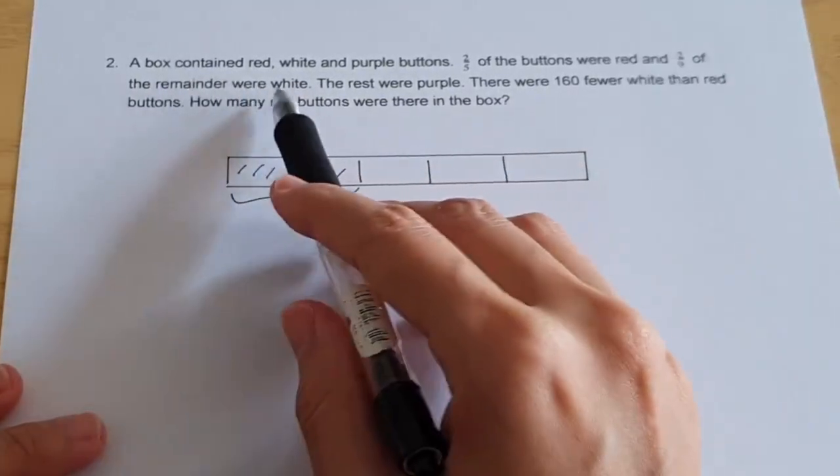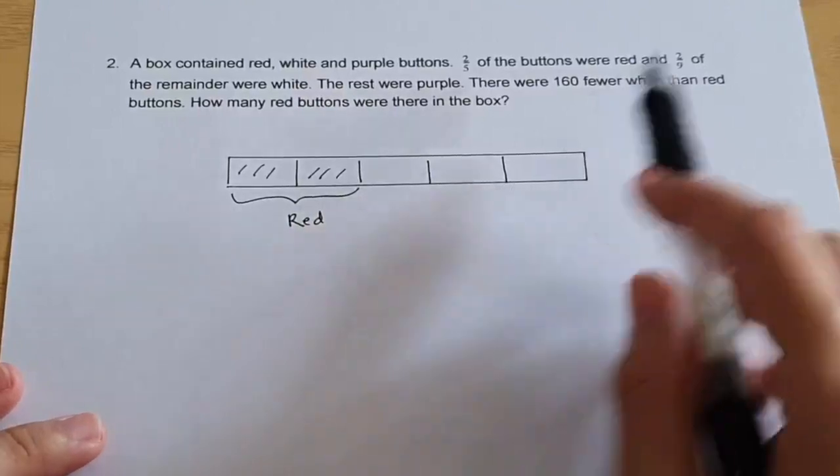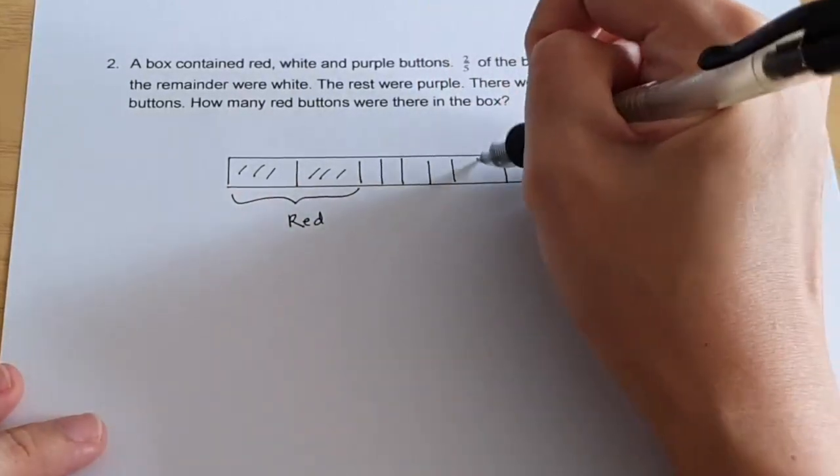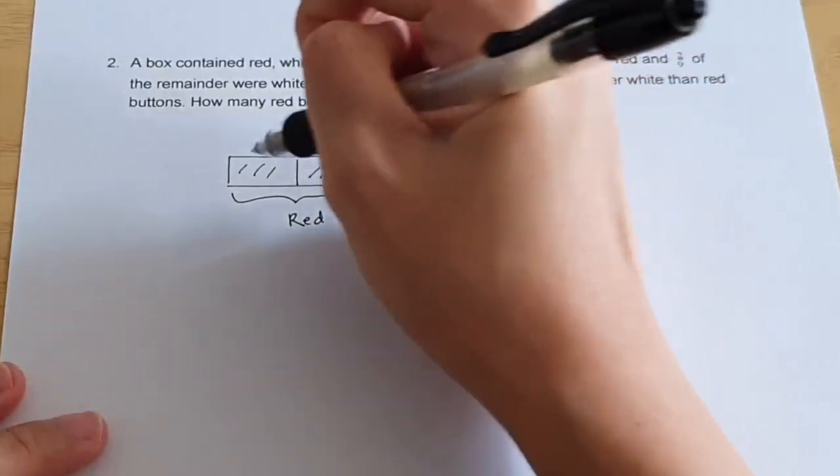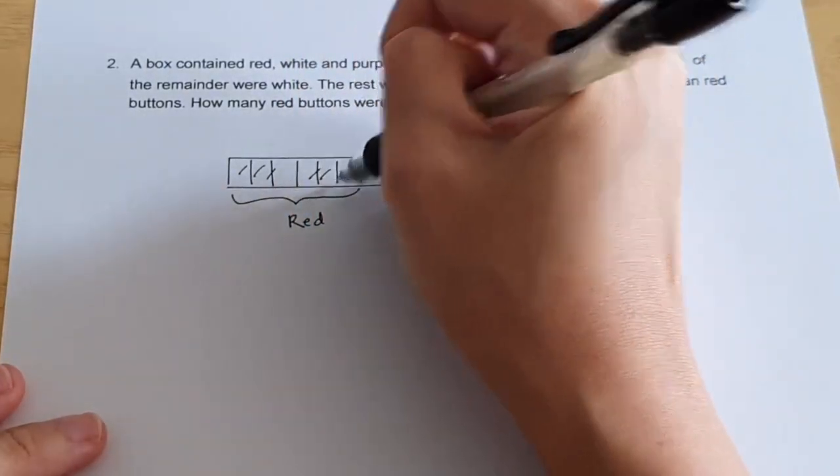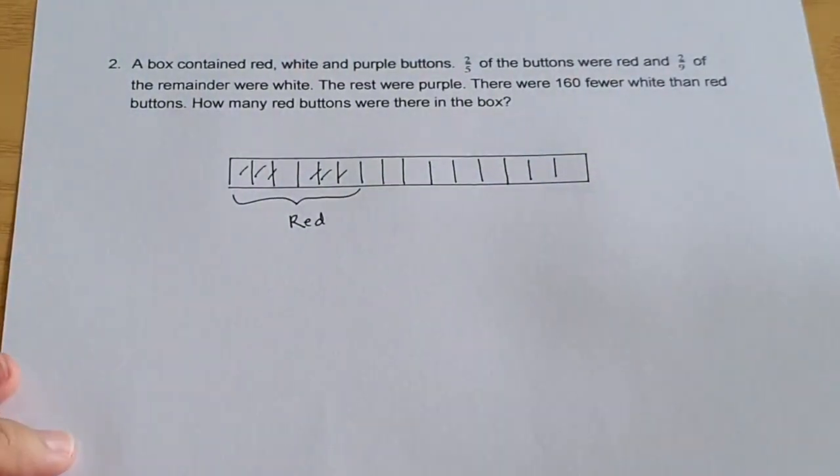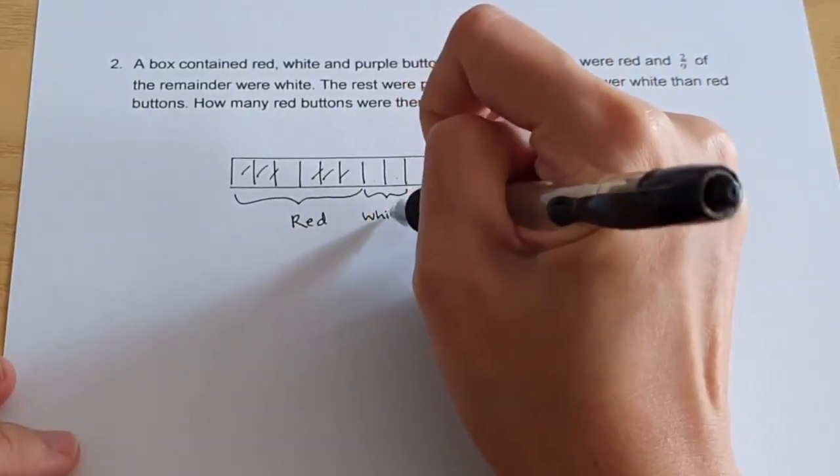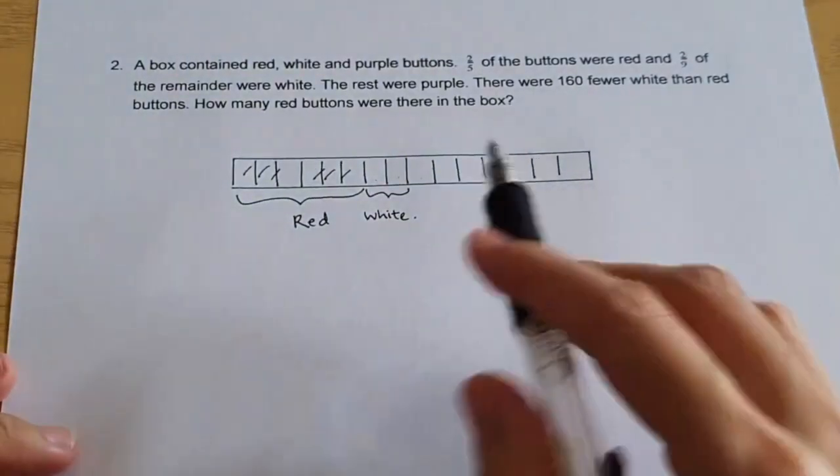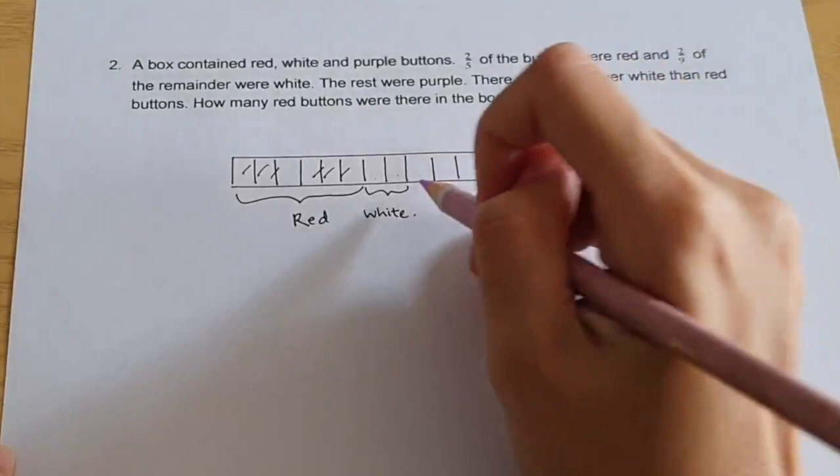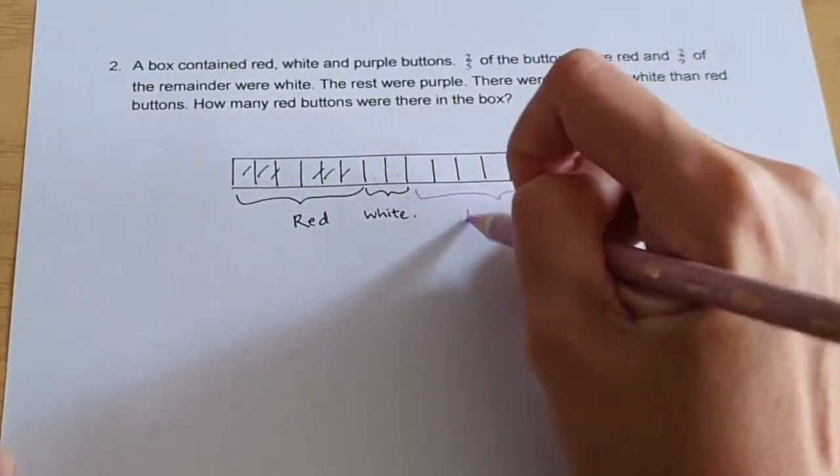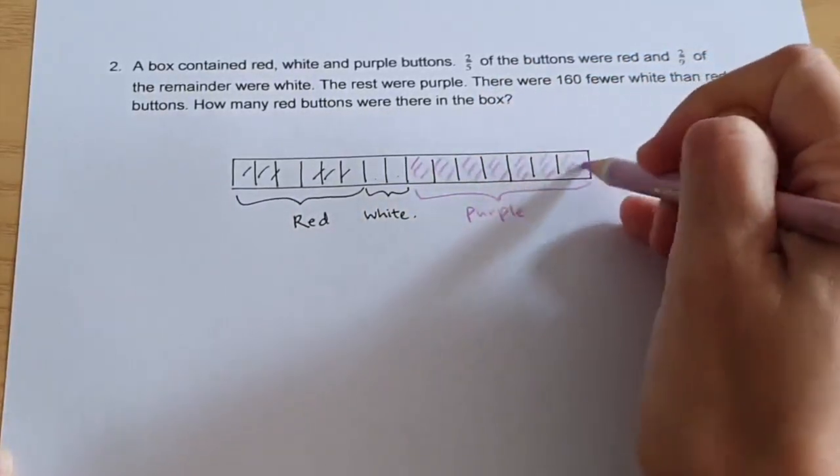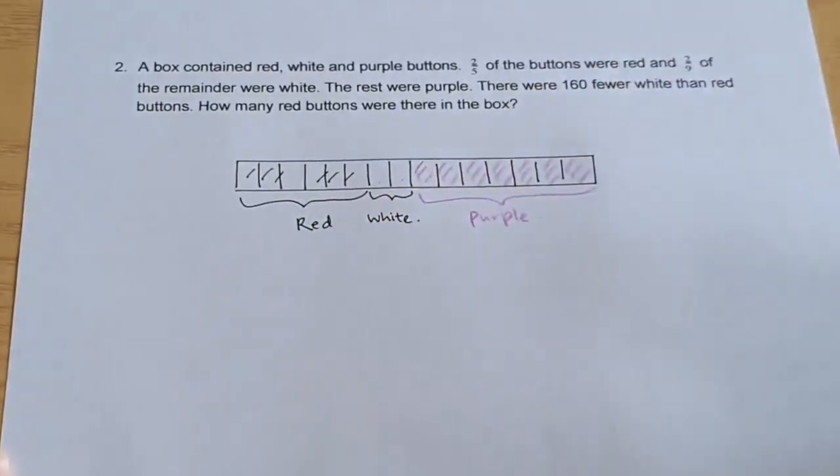Two ninth of the remainder were white. So if I look at the remainder, I have three units but I have to cut it into nine units. So three into nine units means every part will get cut into three. And I'll cut this as well so that they will all become the same size. And two out of nine were white. So one, two, two units white. And the rest of them will be purple. Seven units for purple.